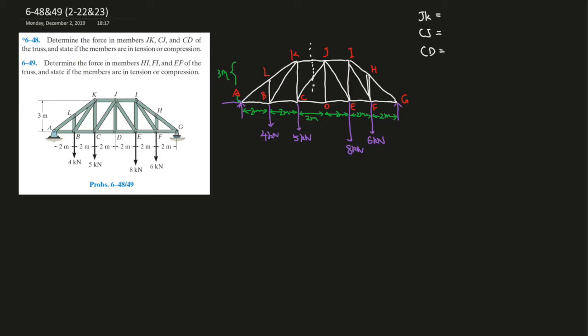So we're looking at JK, CJ, and CD. Determine the forces in these three members which is mentioned in the truss and state whether they're in compression, which is a typical question. Using the method of sections, we're going to cut it at where we're going to solve the forces at, and draw a free body diagram.